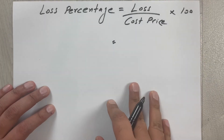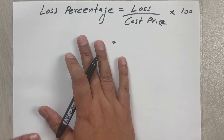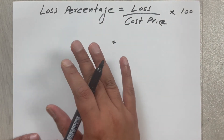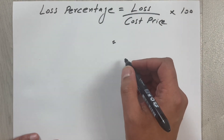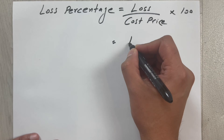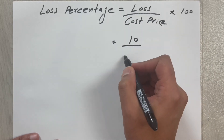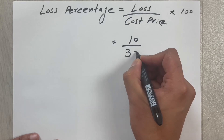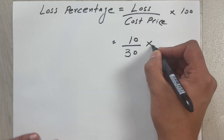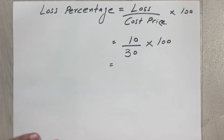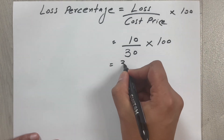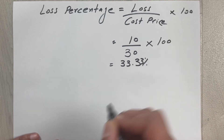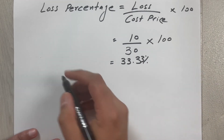I move to the second paper where I already have the formula for loss percentage. For the first deal, the loss was 10 and the cost price was 30. So: 10 divided by 30, multiplied by 100. When we calculate it, the answer is 33.33 percent. This is the loss percentage for the first deal.